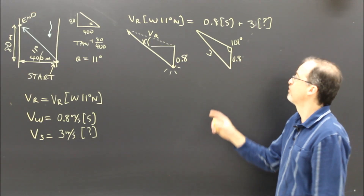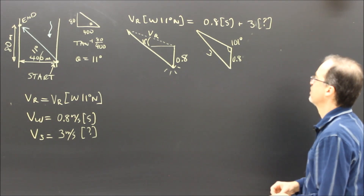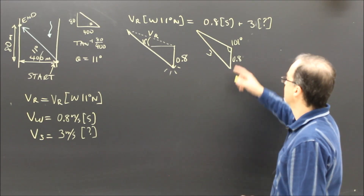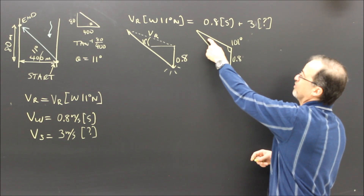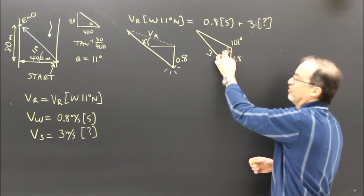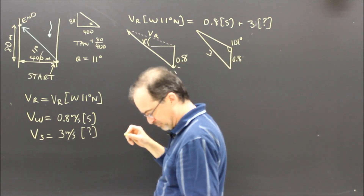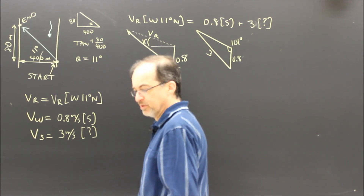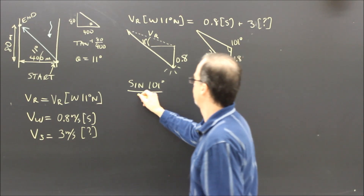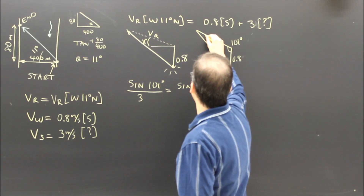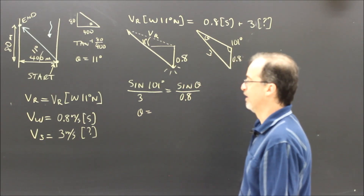I need to figure out the angle opposite the 3 — that's the angle I'm looking for, which way do I go to get there. I'll use the sine law: sine of this angle over this side equals sine of an angle over another side. I have this side, so I can find this angle. It's not exactly the angle I want, but once I get it and know 101 degrees, I can solve for the last angle using 180 minus those two. So: sine of 101 over 3 equals sine of this angle over 0.8. Rearranging, that angle is 15 degrees.